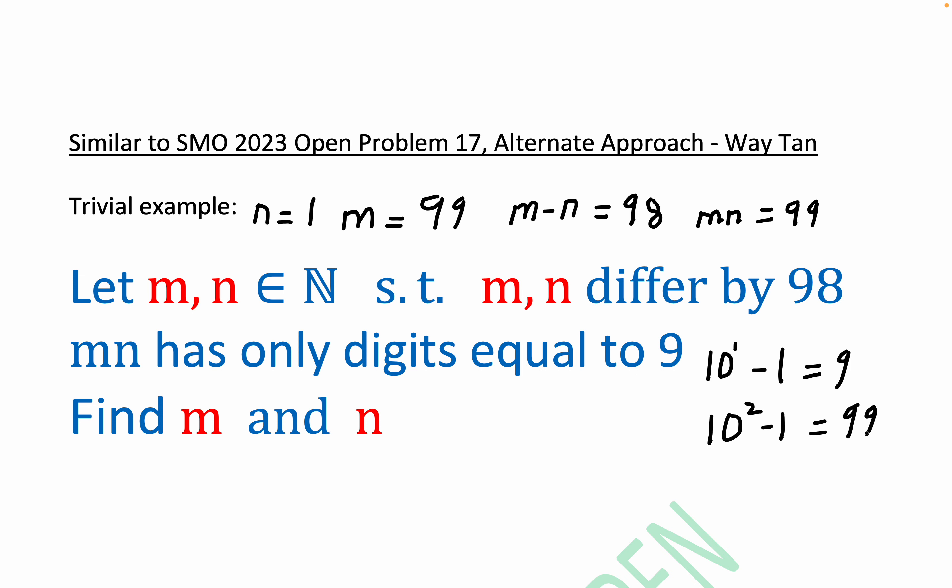Of course, you see what's going on here. I'll just write one more example. 10 cubed minus 1 is 3 nines. And so you can see this pattern definitely is going to continue ad infinitum for all the natural numbers.